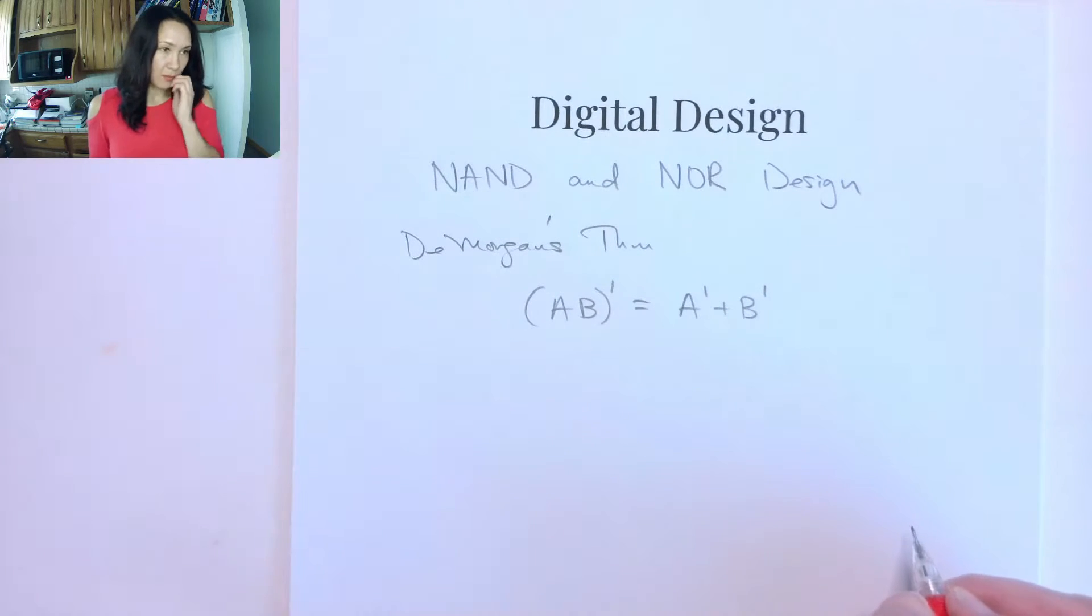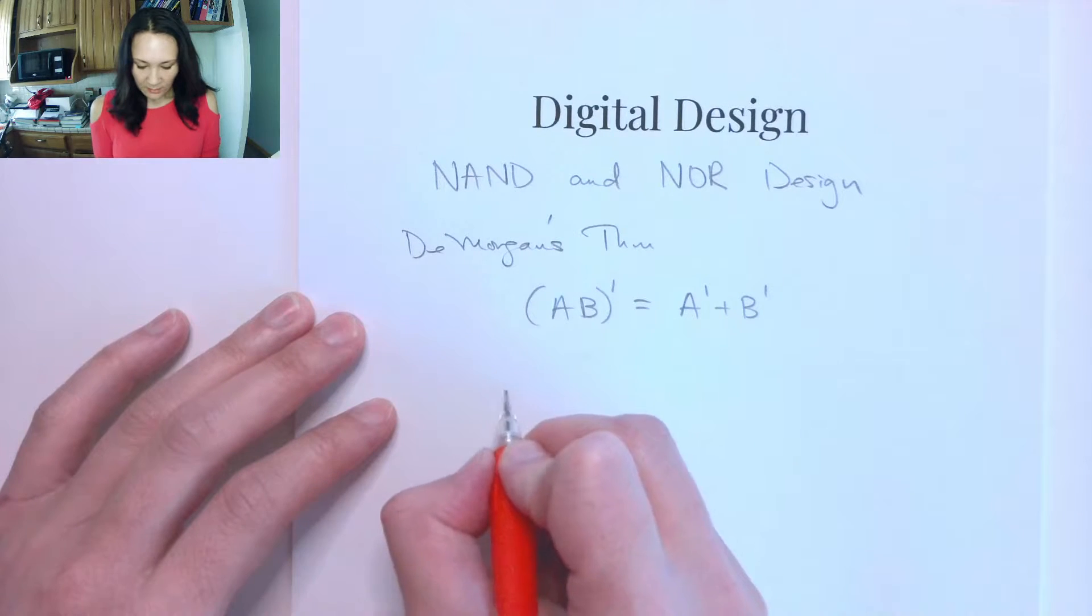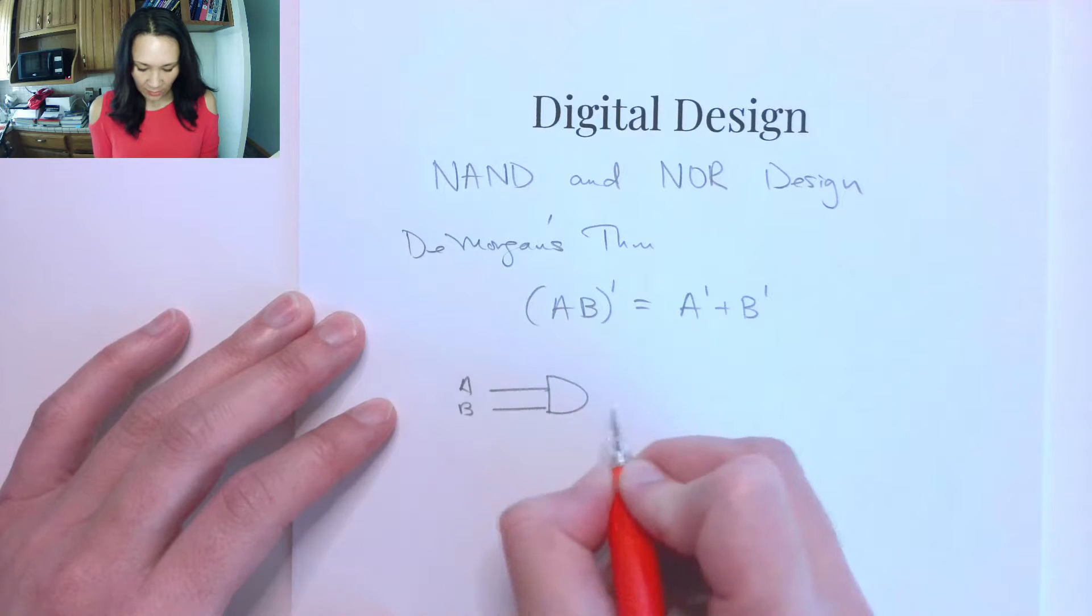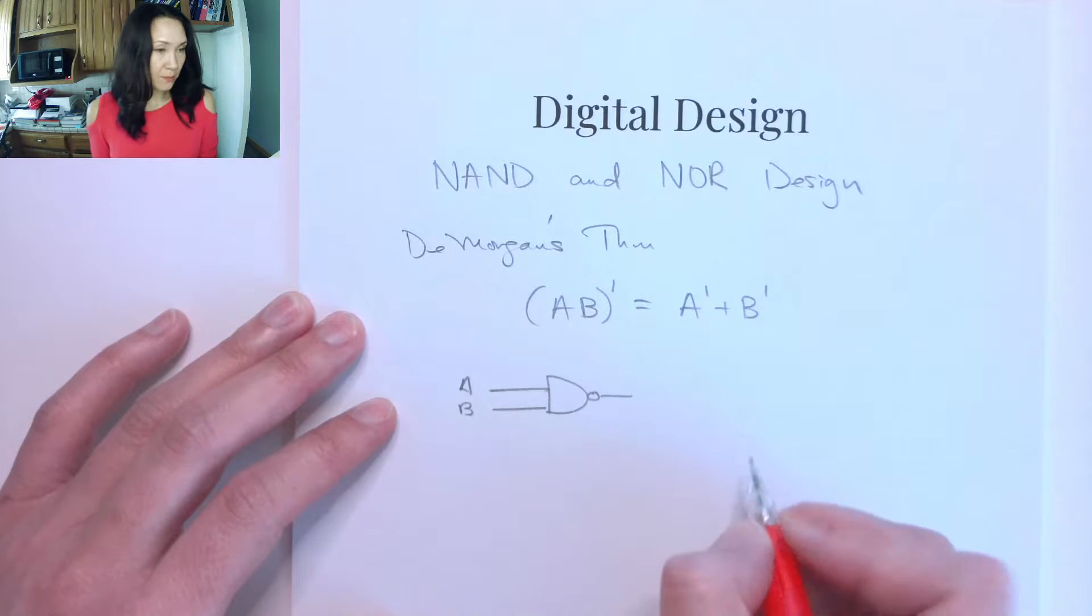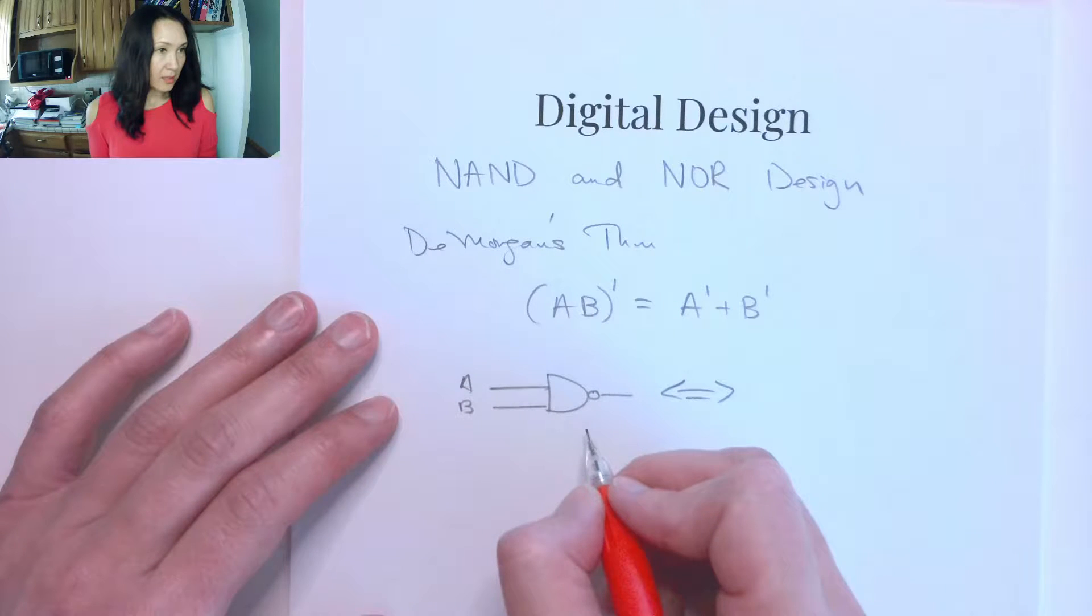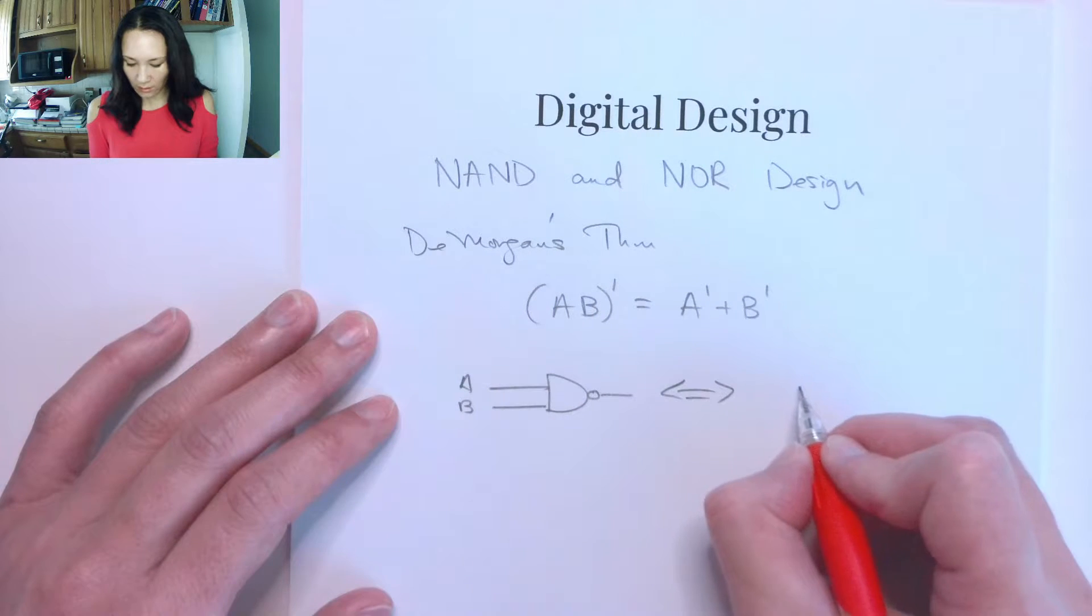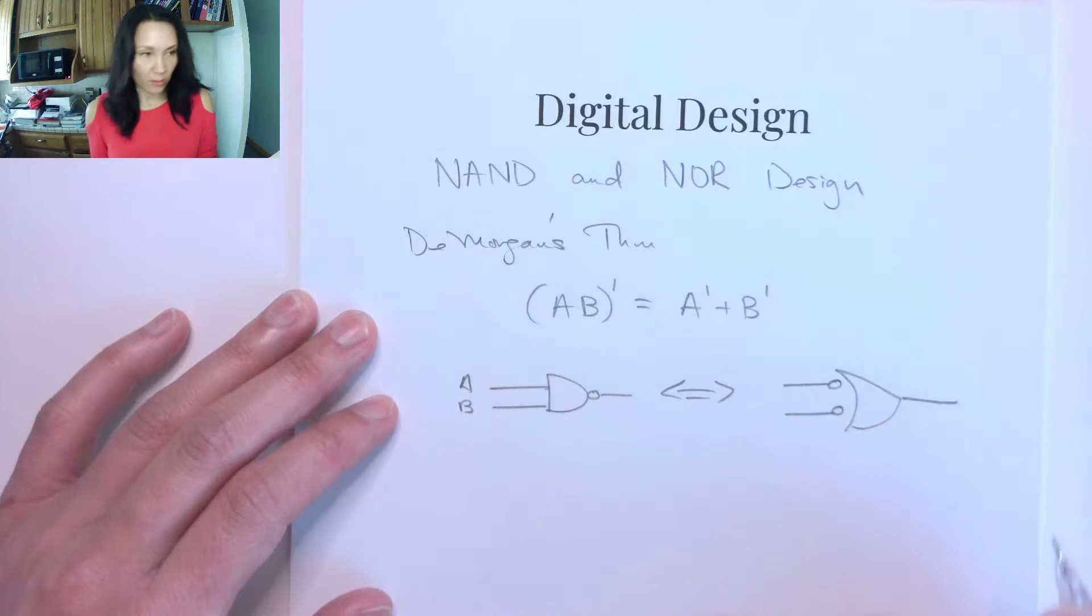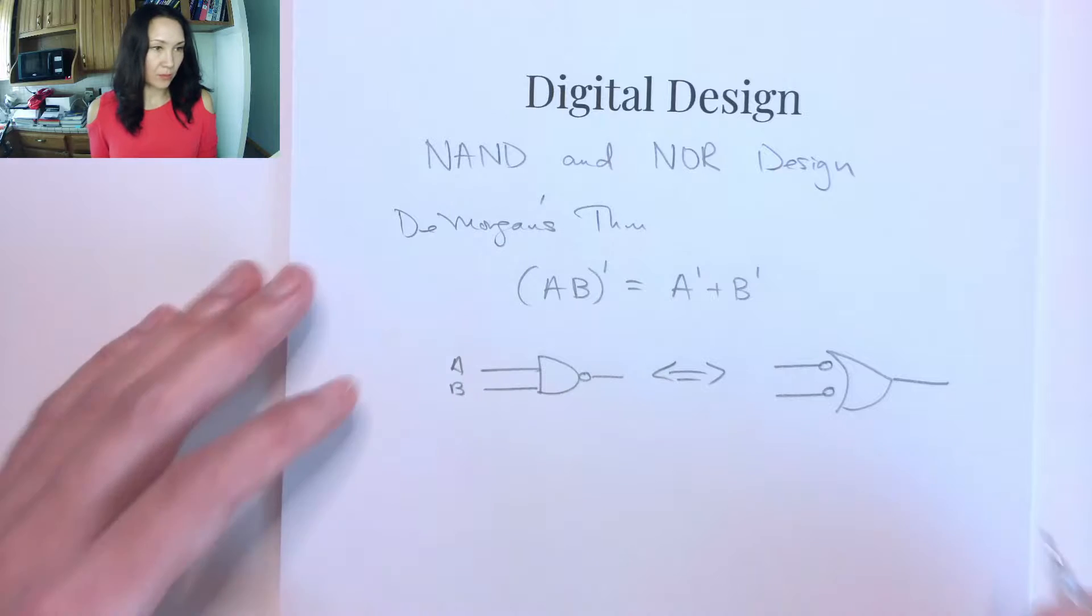So what does that mean from a circuit perspective? Well, that means that if we have two inputs, A and B, that are ANDed together and then inverted, that that NAND gate can be replaced with an OR gate where we invert the inputs before they go into the gate.